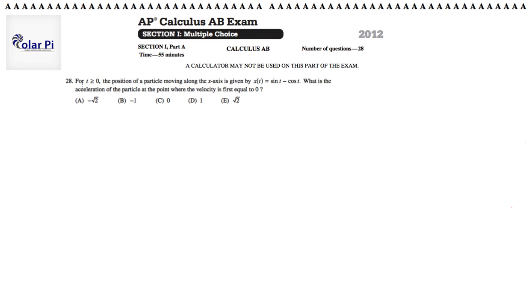Problem 28 says for t greater or equal to zero, the position function of a particle moving along the x-axis is given by x of t, which is equal to sine t minus cosine t.